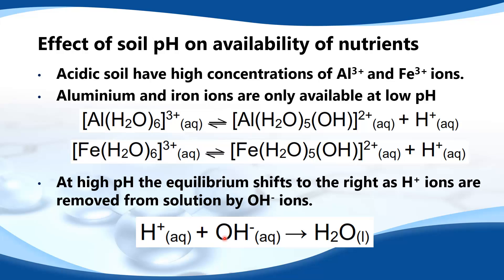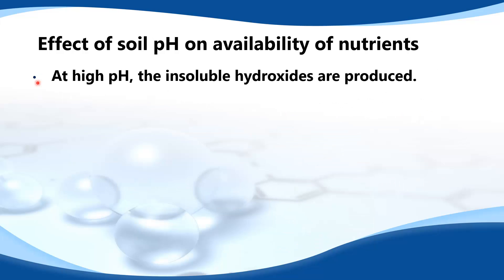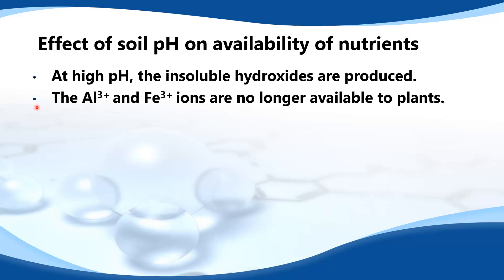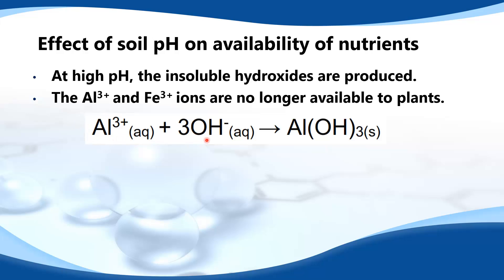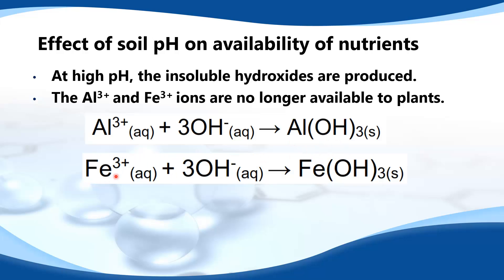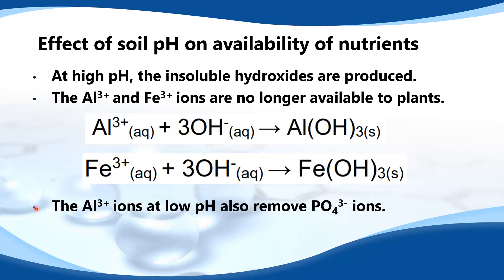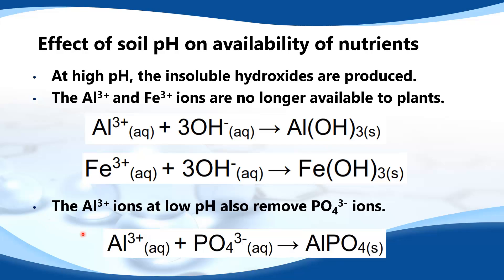H⁺ ions react with OH⁻ ions to form a molecule of water. At high pH the insoluble hydroxides are produced, so the Al³⁺ and Fe³⁺ ions are no longer available to plants. Here we have the Al³⁺ ion reacting with hydroxide ions to form insoluble aluminium hydroxide. Finally, the Al³⁺ ions at low pH also remove phosphate ions — aluminium ions react with phosphate ions to form insoluble aluminium phosphate.